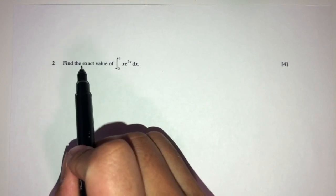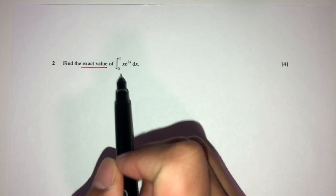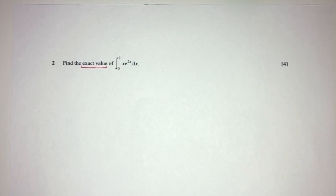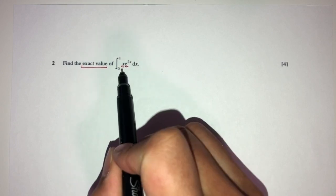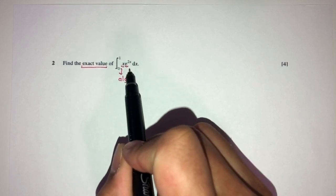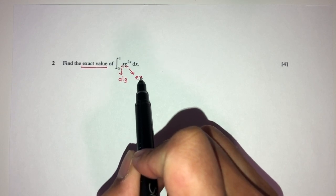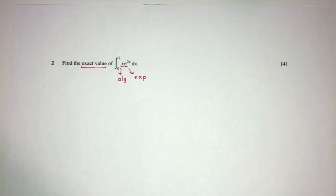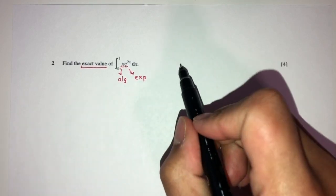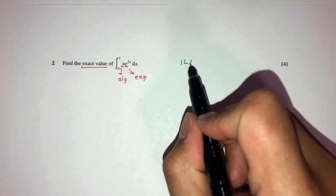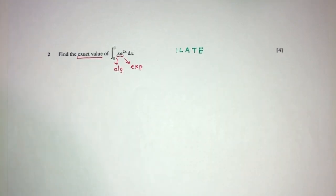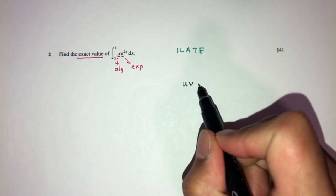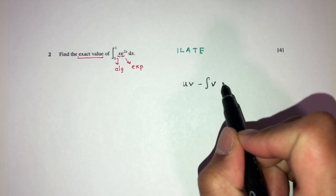Now let's move on to question number two. We have to find the exact value of the integral of x · e^(2x) from 0 to 1. We observe that x is an algebraic function and e^(2x) is an exponential function, so this will be an integration by parts. The formula for integration by parts is: ∫u dv = uv − ∫v du.